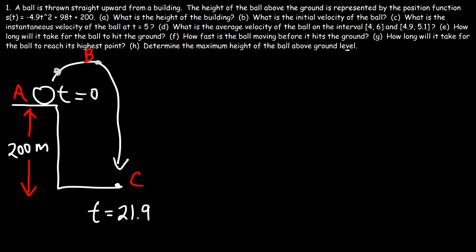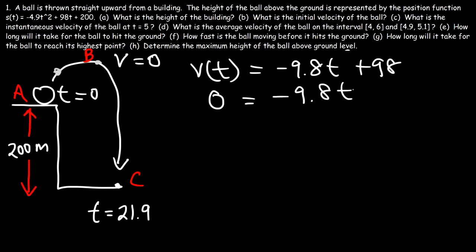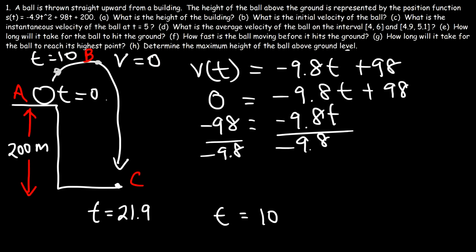Part G: how long will it take for the ball to reach its highest point? At point B, the velocity in the Y direction equals zero. Starting from V(t) equals negative 9.8t plus 98, we set V(t) equal to zero: negative 98 equals negative 9.8t. Dividing both sides by negative 9.8 gives t equals 10. So it takes 10 seconds for the ball to reach its highest position.